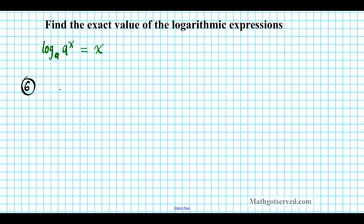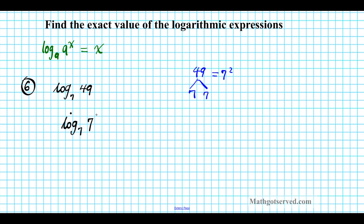Question number 6: what is the exact value of the expression log base 7 of 49? To apply the inverse property, the base of the logarithm and the base of the exponent must be identical. Since 49 is not a power with base 7 yet, the question is: can I express 49 as a power of 7? Yes — 49 is 7 squared. So we rewrite this as log base 7 of 7 to the second power, apply the inverse property — these two cancel out — and your final answer is simply 2. So log base 7 of 49 is equal to 2.